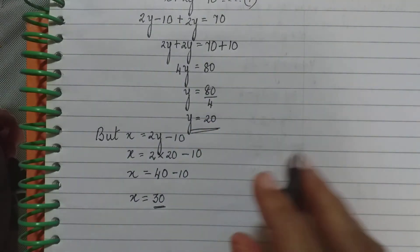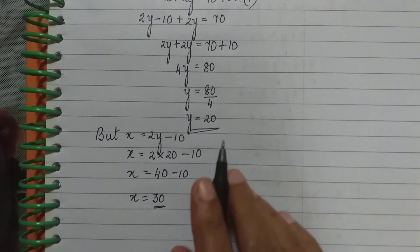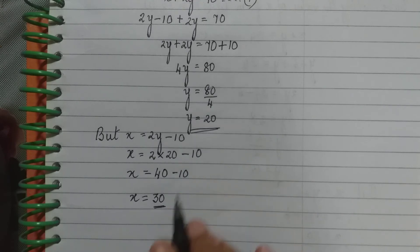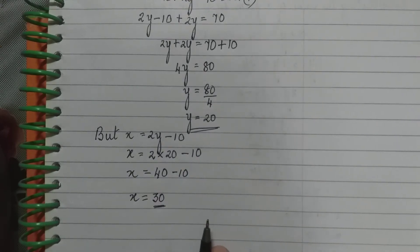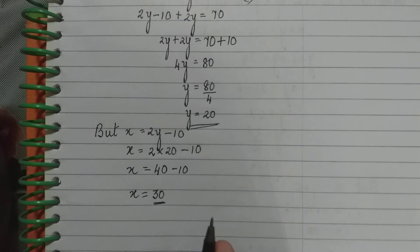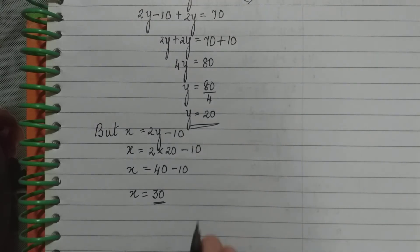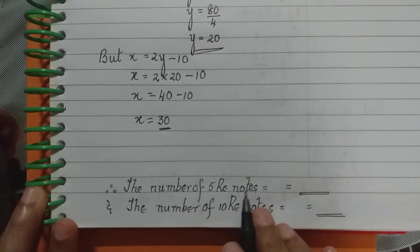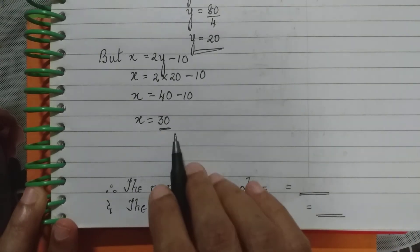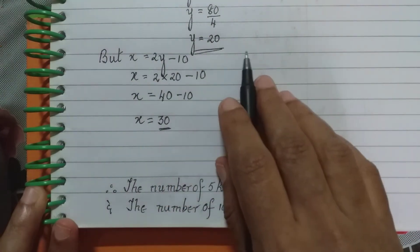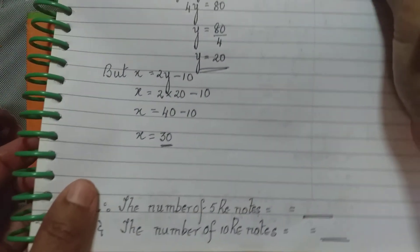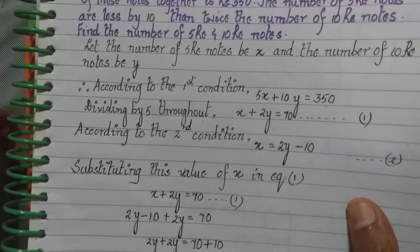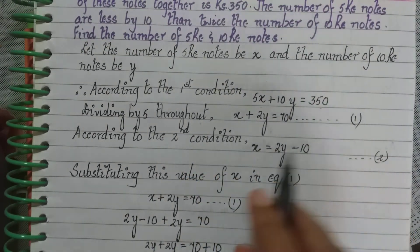Now let us take these two values and put them back into our equations to see if they satisfy both. Writing the final statement is very important and carries one mark in every problem. So we first verify X = 30, Y = 20 in Equations 1 and 2.